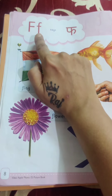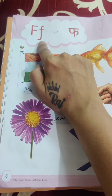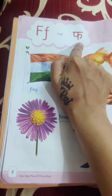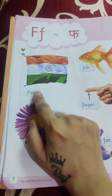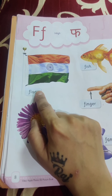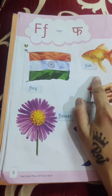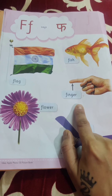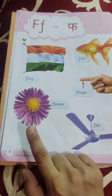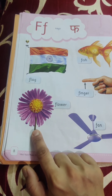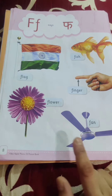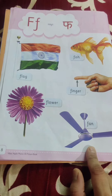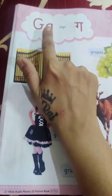Capital F, small f. F says F. Flag, fish, finger, flower, fan.